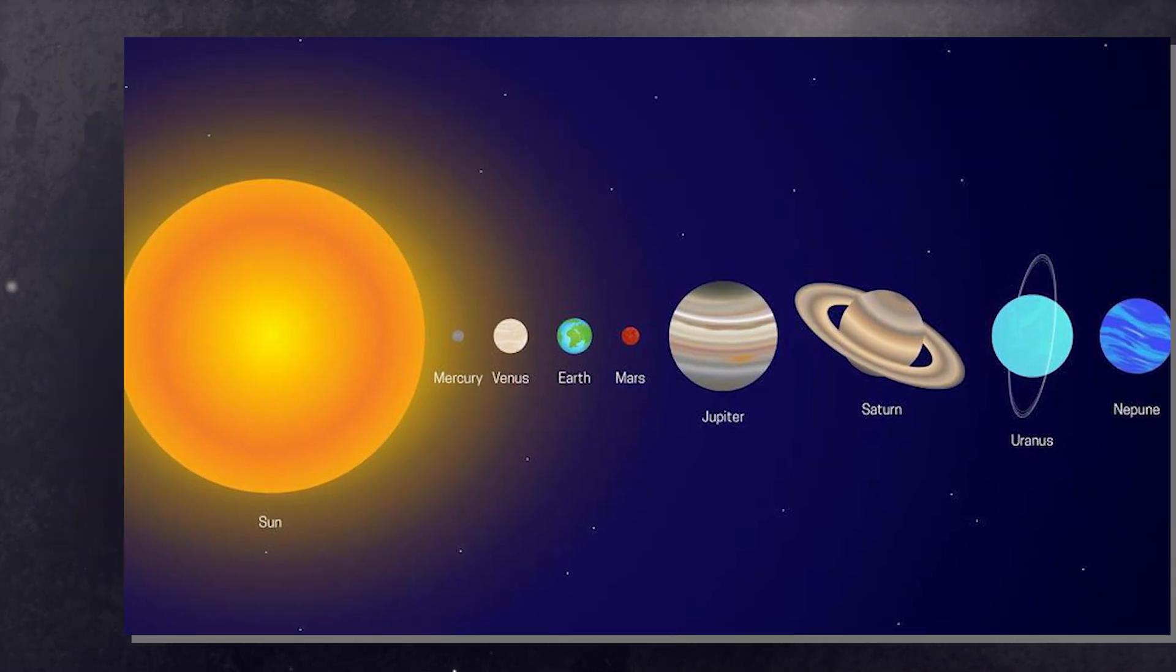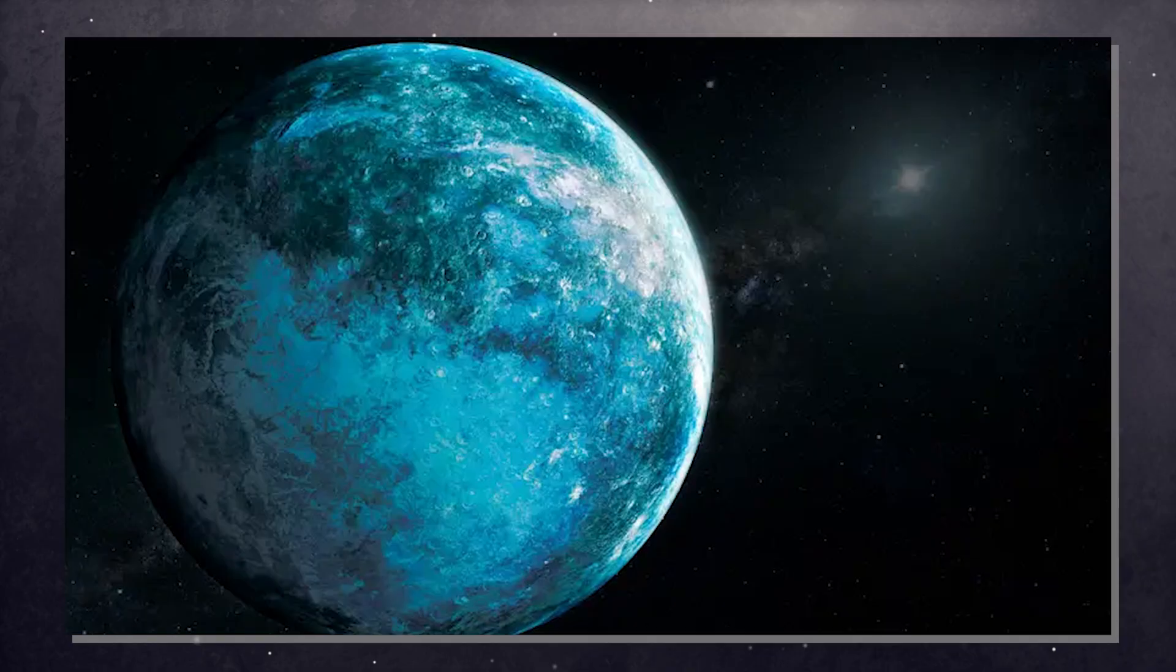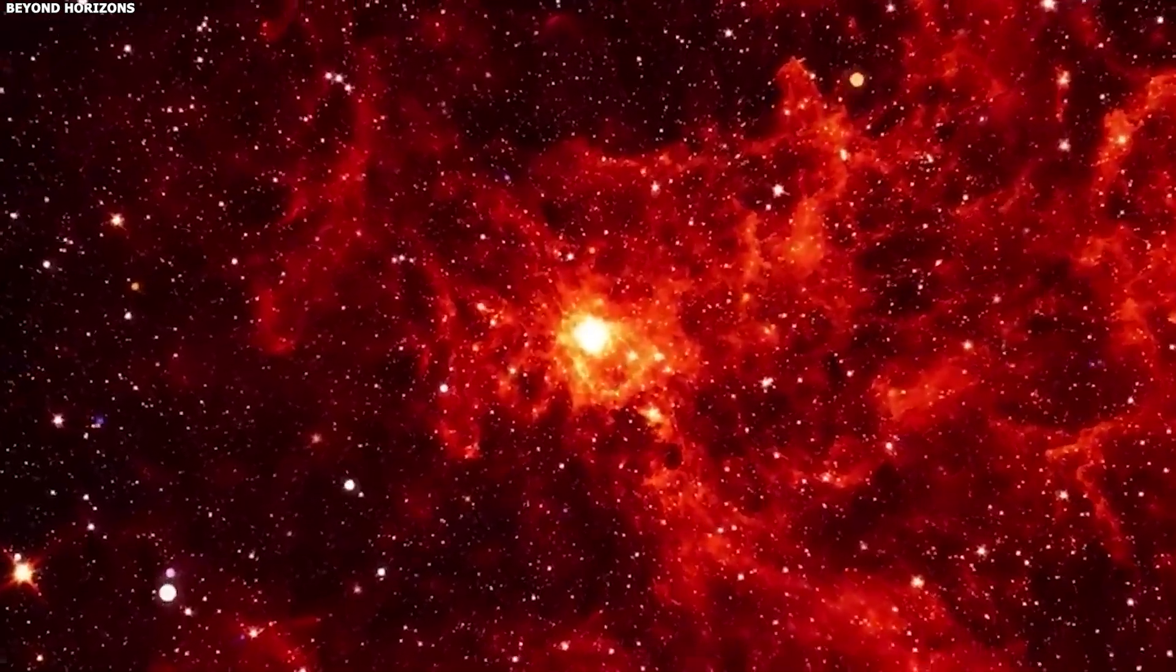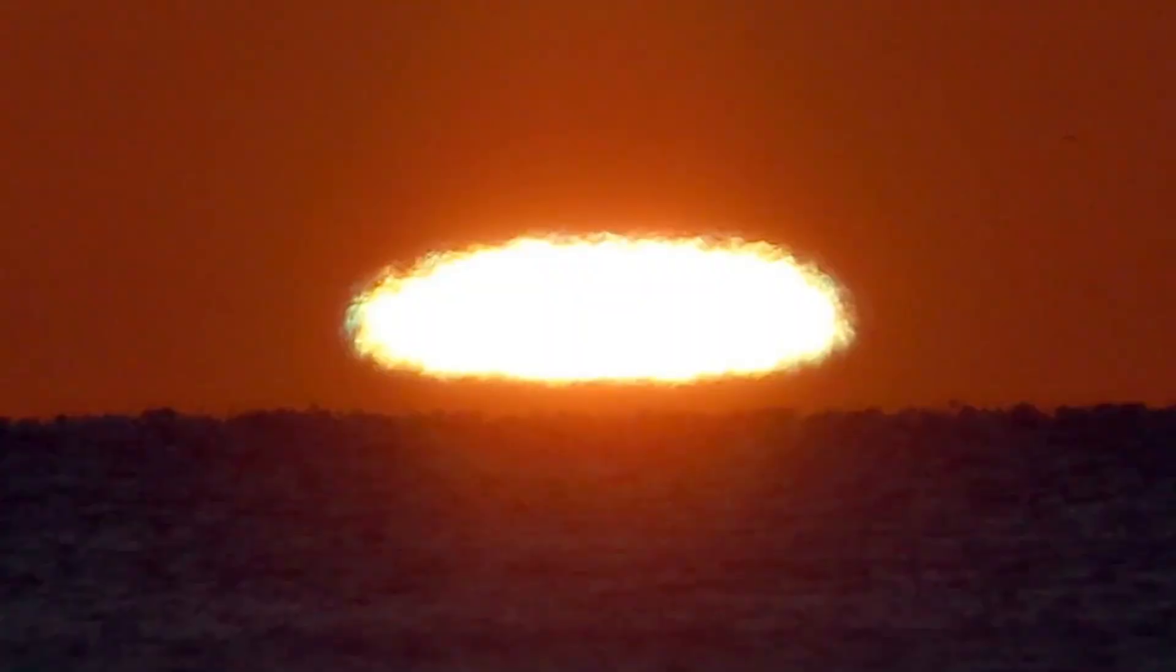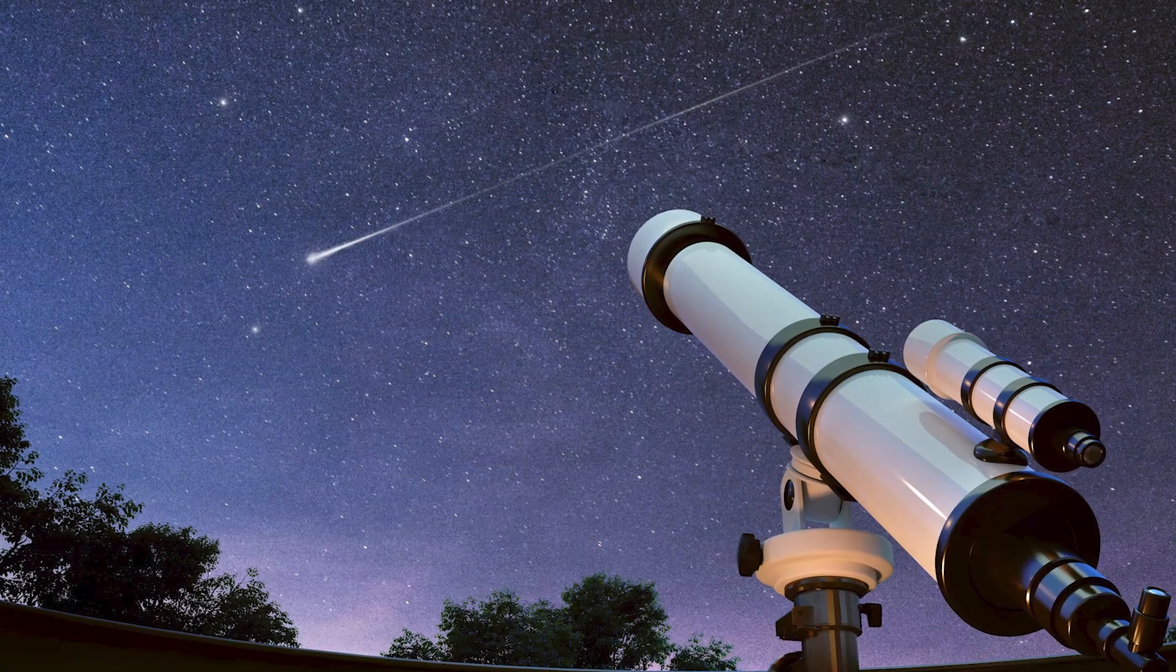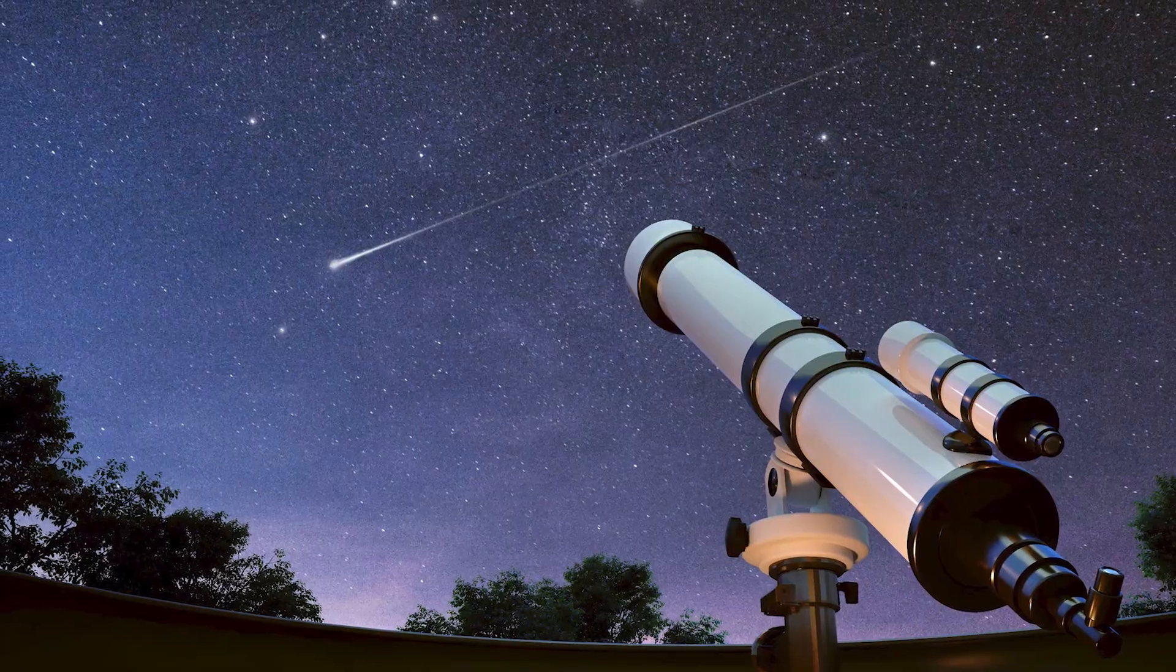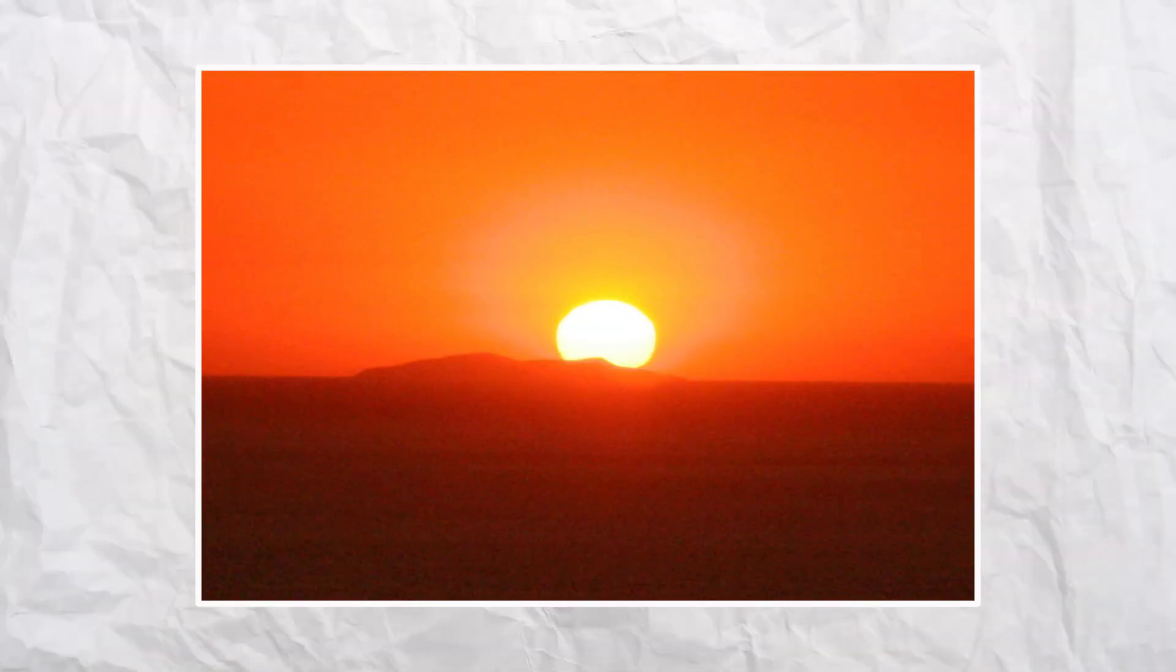Its orbit also didn't make sense. Mercury was drifting in ways that Newton's gravity couldn't account for. The innermost planet was moving too fast through its orbit, advancing slightly more than predicted with each pass around the Sun. So astronomers tried the same trick that worked for Uranus. They predicted another planet, even closer to the Sun. They called it Vulcan.